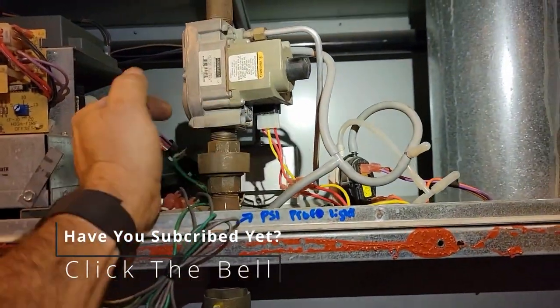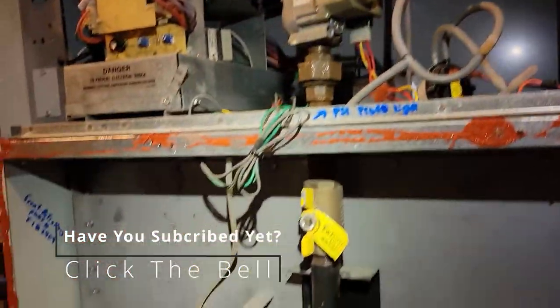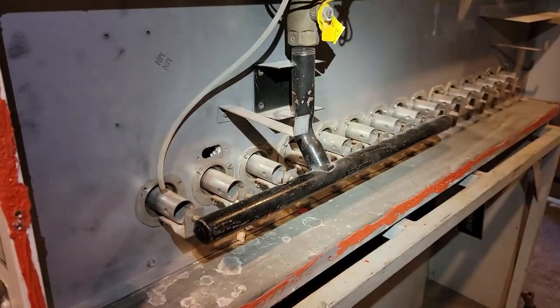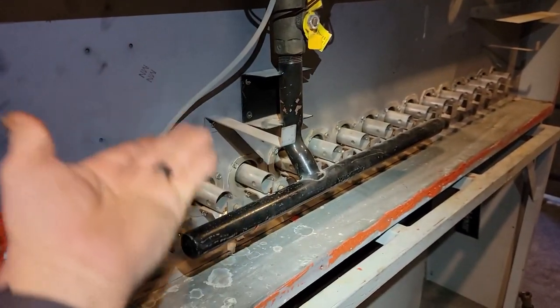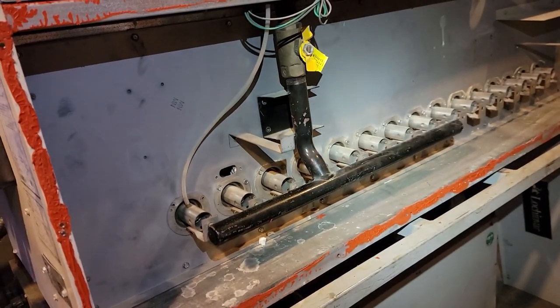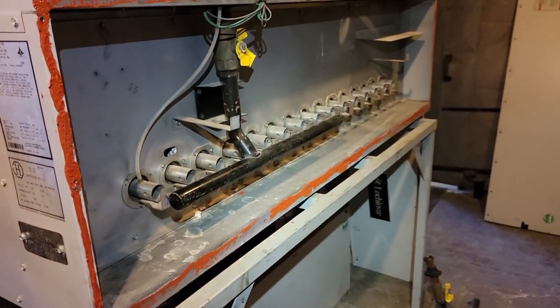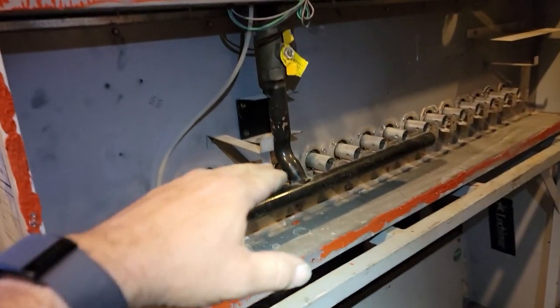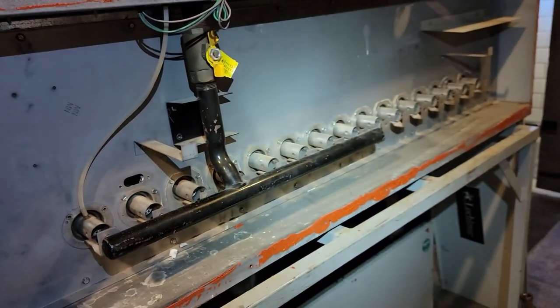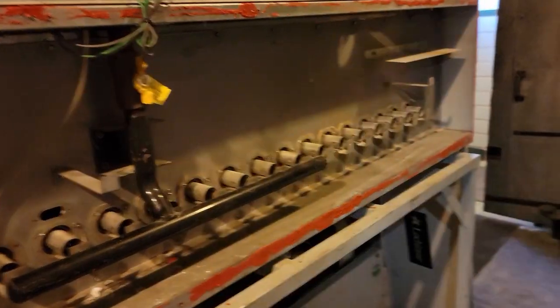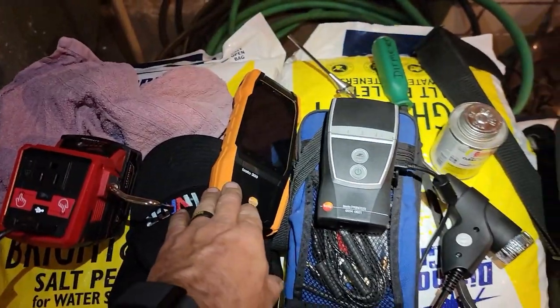I ended up going through, pulling out these first four or five burners here, making sure there's nothing causing disturbance. Got everything back together, talked to the factory, got the gas pressure set right. Trying out the new Testo 300 and CO is 800 parts per million.